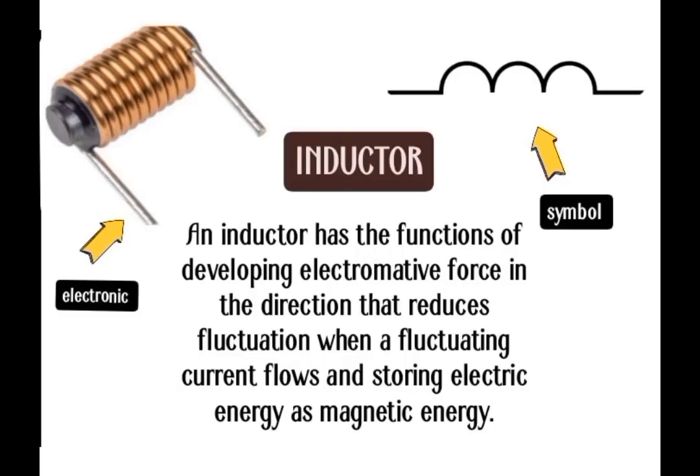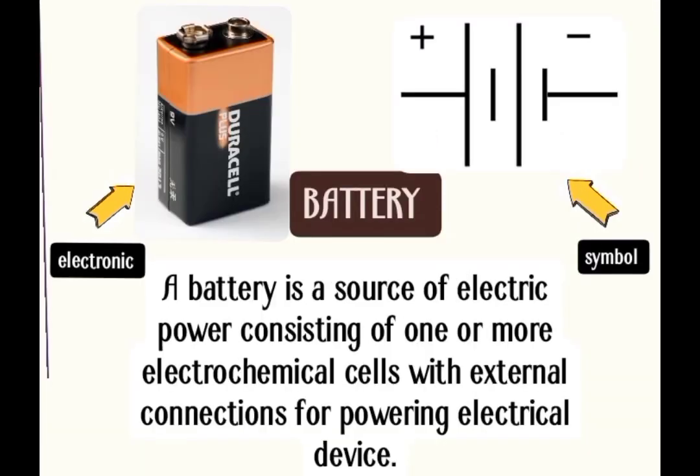Inductor: An inductor has the function of developing electromotive force in the direction that reduces fluctuation when a fluctuating current flows, and storing electric energy as magnetic energy. Battery: A battery is a source of electric power consisting of one or more electrochemical cells with external connections for powering electrical devices.